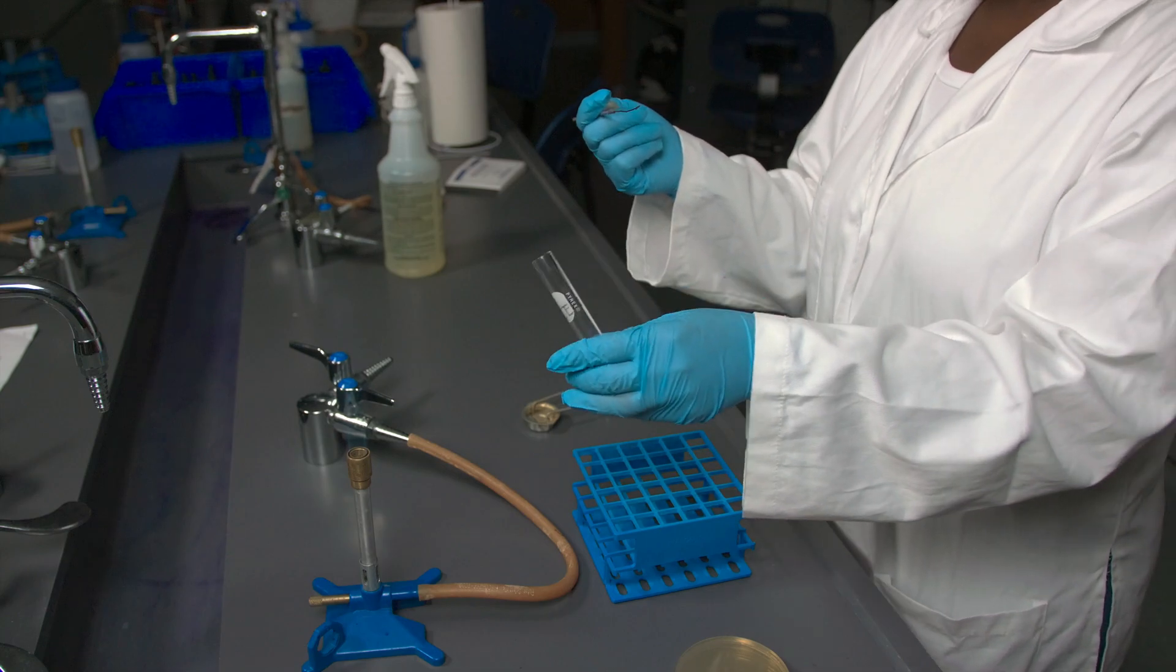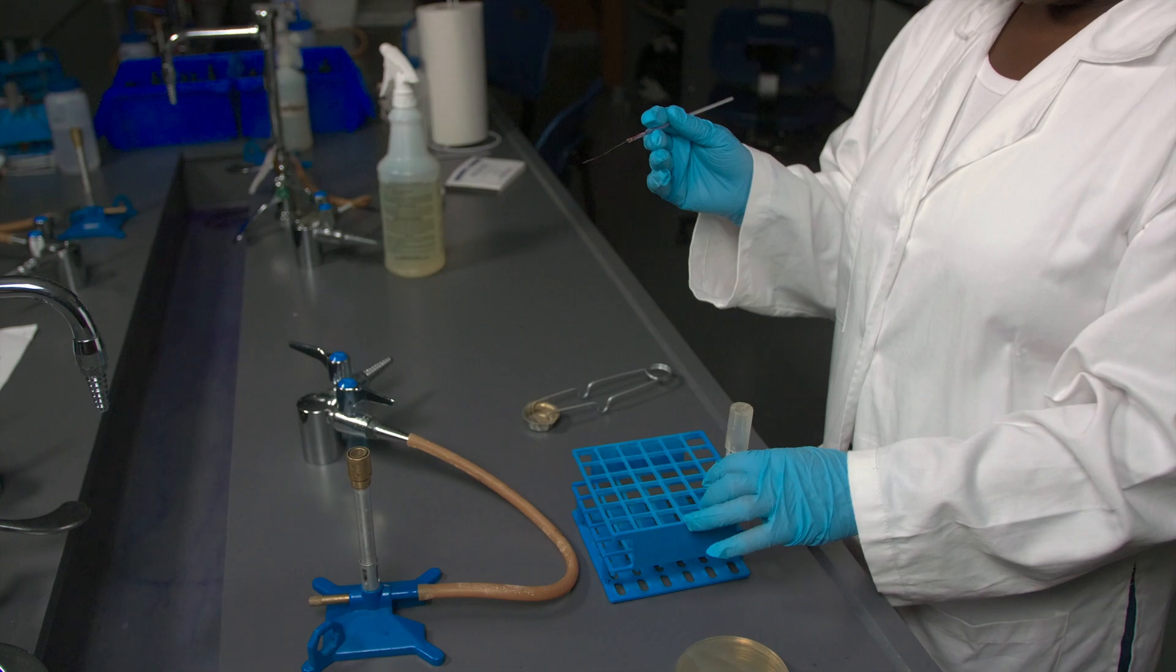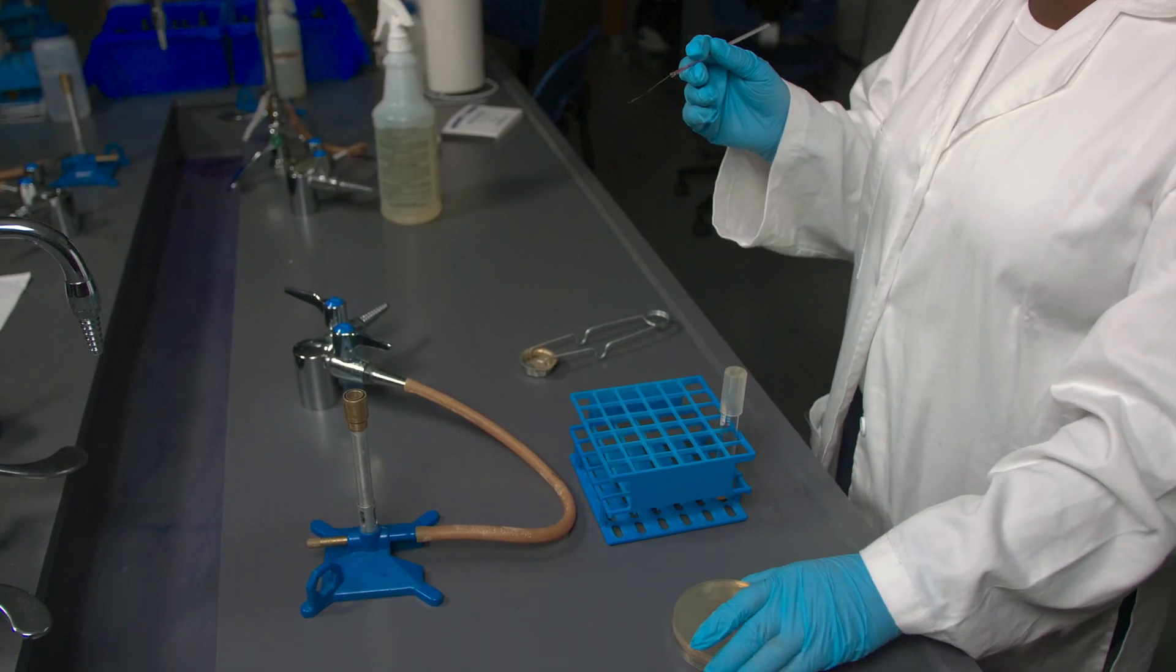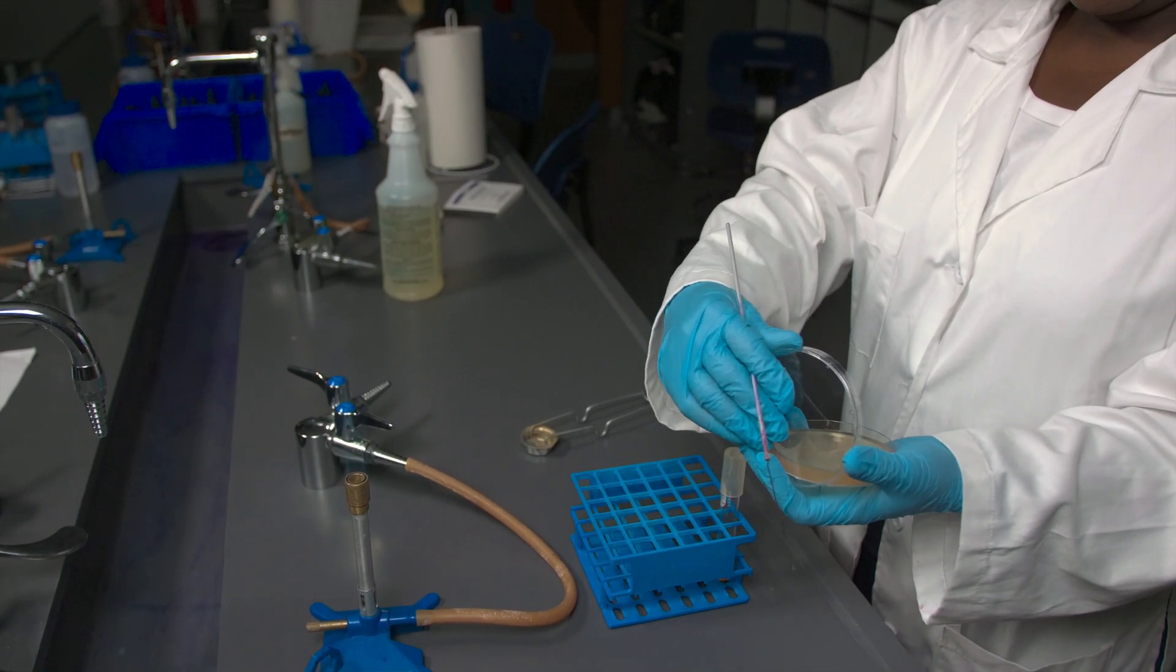Remove the loop from the broth and flame the rim of the broth tube. Replace the cap on the broth tube and place it in the test tube rack. Pick up the sterile plate and open it while holding the lid ajar.